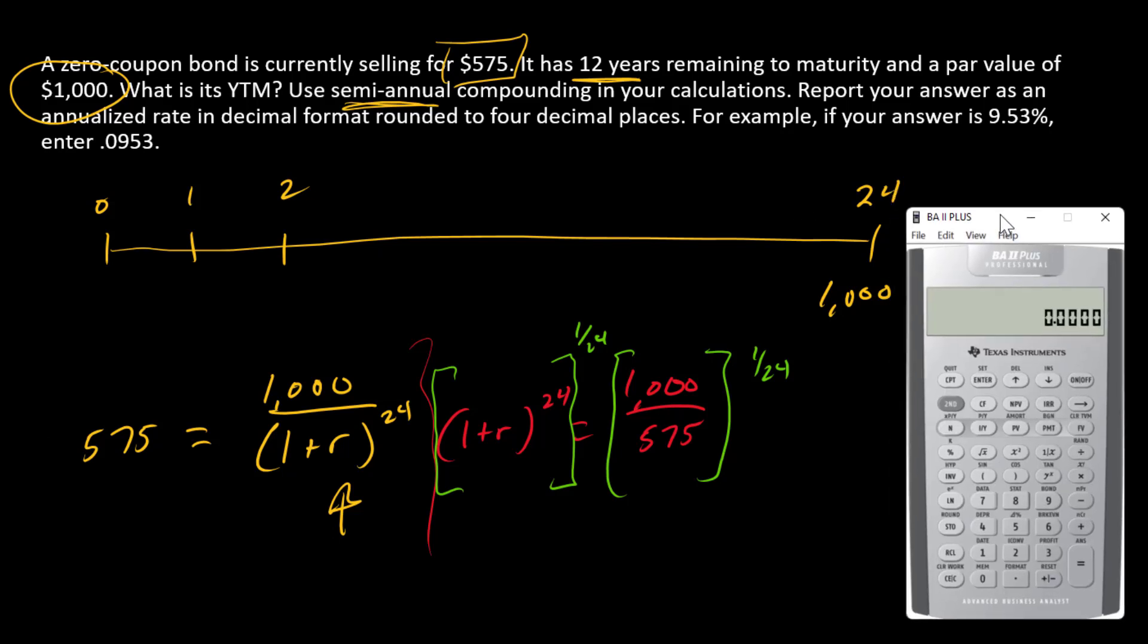So with my calculator, starting here on the right side, I can say $1,000 divided by 575. That is this number here. I'm going to raise it to the 1/24th power. So y to the x, open parenthesis, 1 divided by 24, close parenthesis, equals, so it's 1.0233. So that's 1 plus r. So what's r? r is 2.33%.